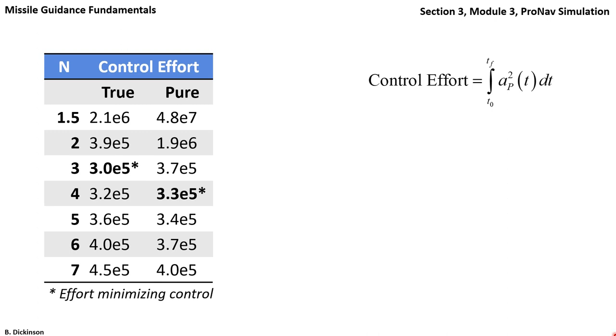Evaluating control effort for various N for both true and pure ProNav, we make a table. Let's take a look at true. The highest control effort is for N equals 1.5. For 2, it decreases. For 3, it decreases.